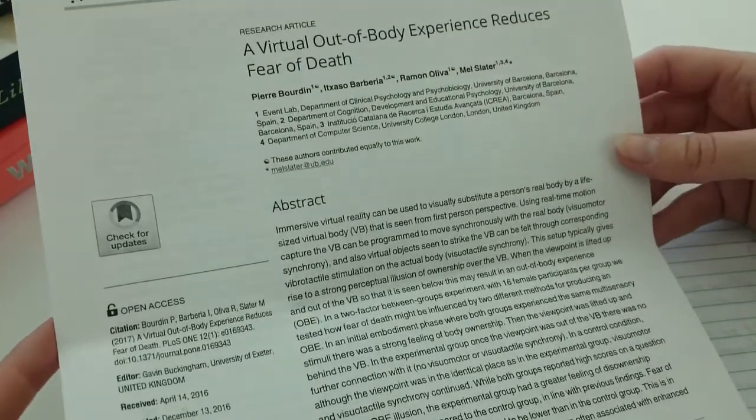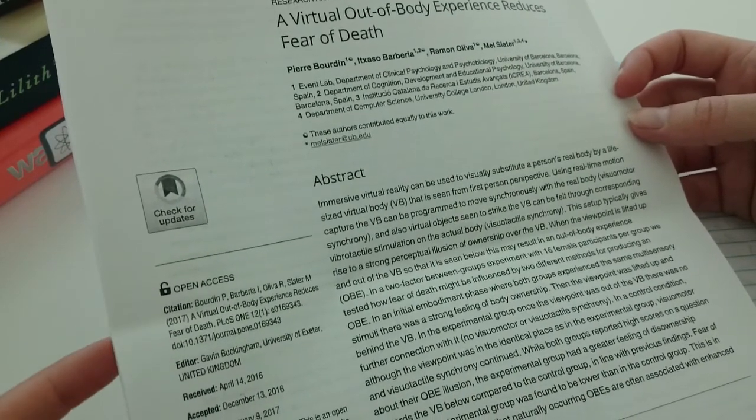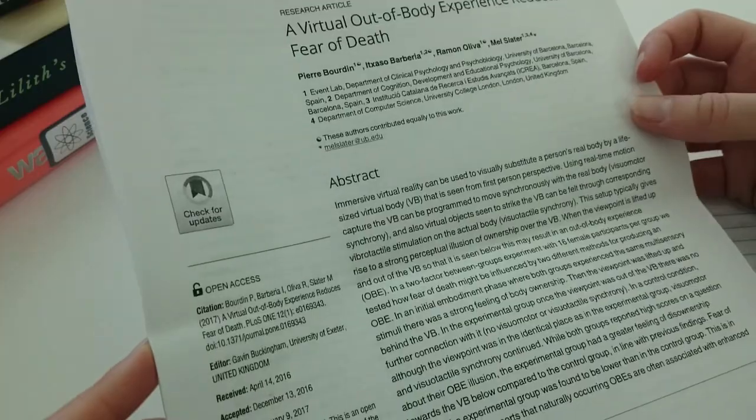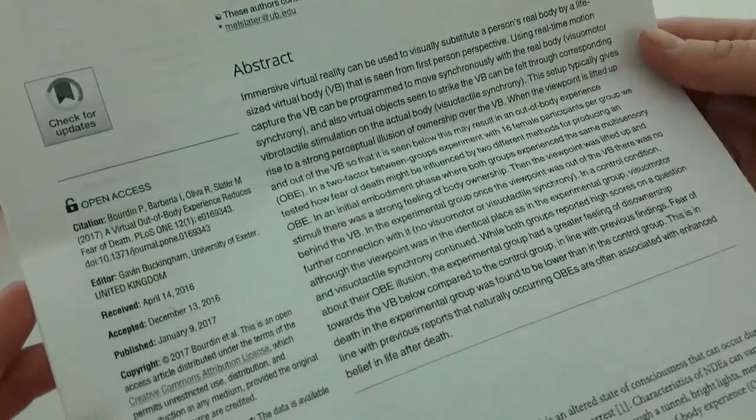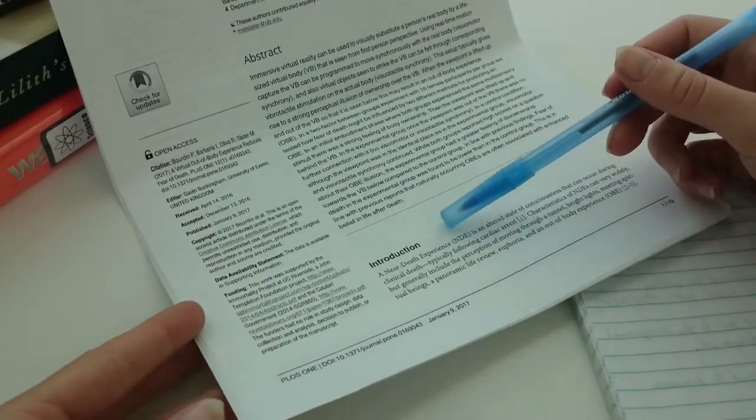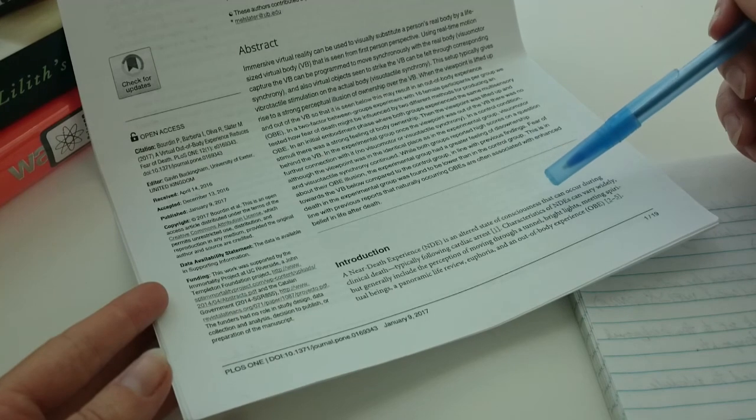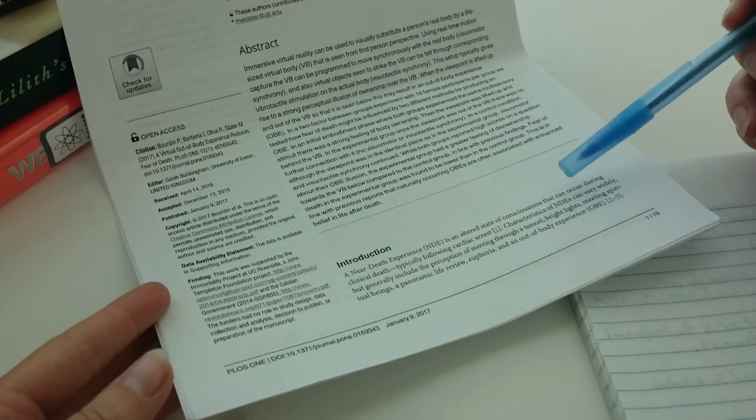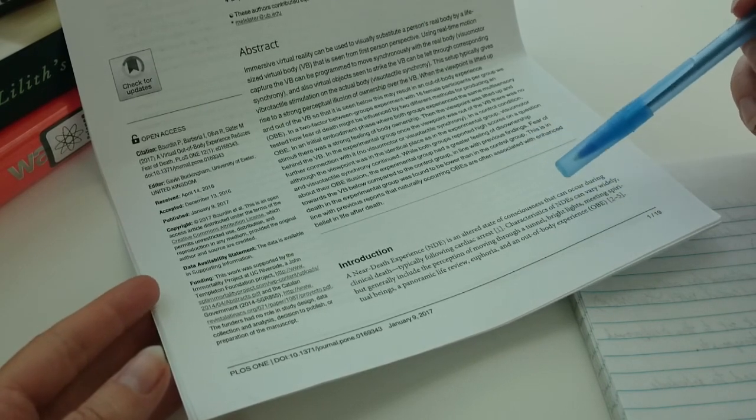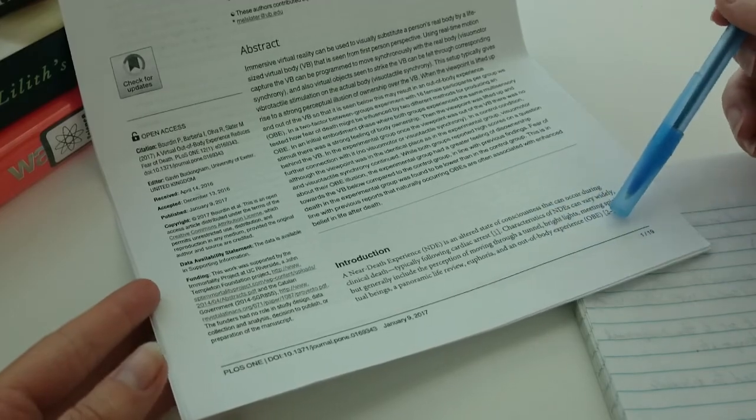So the abstract basically explains that they did an experiment with 16 participants and experimented with different viewpoints. A near-death experience, NDE, is an altered state of consciousness that can occur during clinical death, typically following cardiac arrest. Characteristics of NDEs can vary widely, but generally include the perception of moving through a tunnel, bright lights, meeting spiritual beings, a panoramic life review, euphoria, and an out-of-body experience.